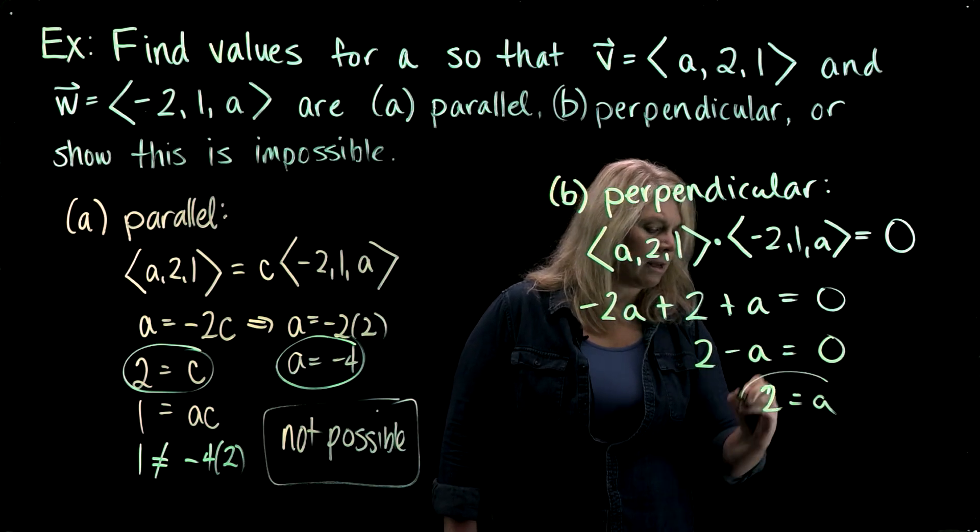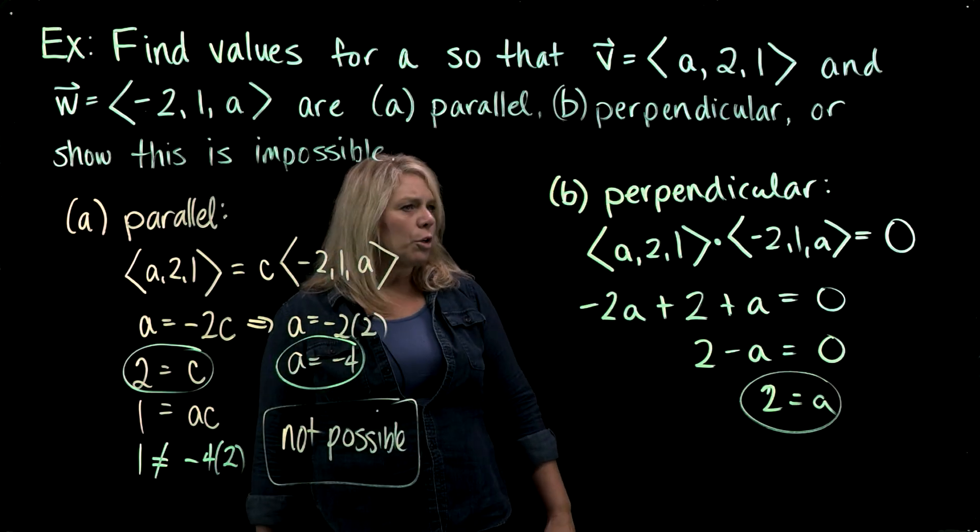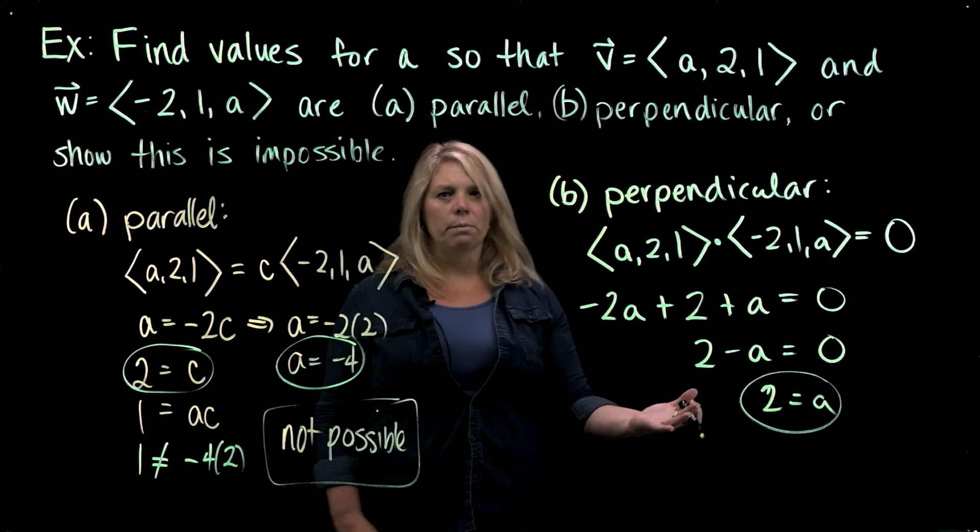And so when I solve that for a, I get two equals a. So a equals two would make these two vectors perpendicular to each other.